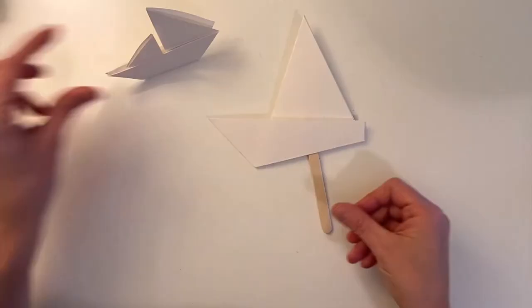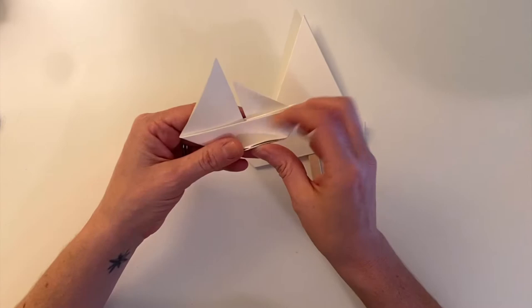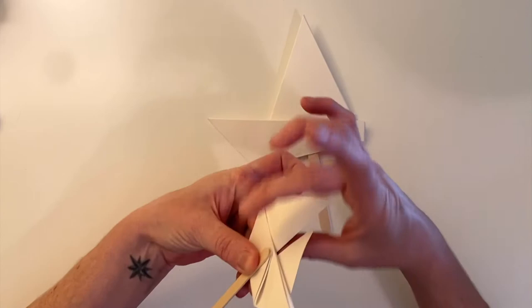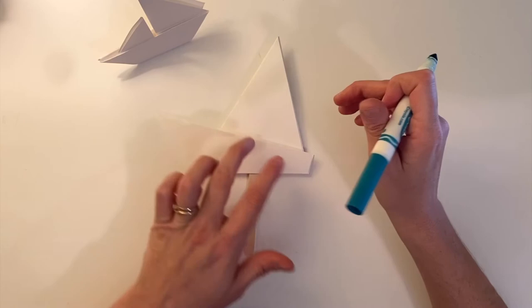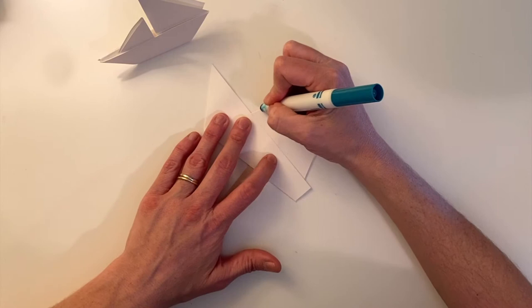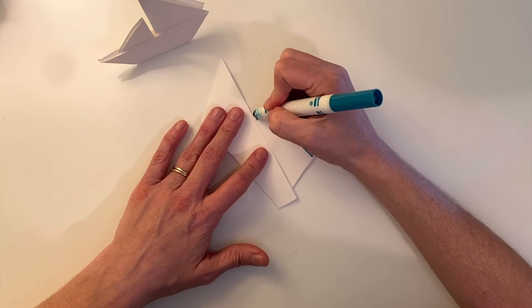If you want to add a popsicle stick to the boat that you just made, you can glue that fold, that stand, to the back of the boat, and then glue the popsicle stick on the back of that. But I'm going to keep it so that it stands on its own. So now you get to use whatever materials you want and have at home to decorate your boats. You can use markers, colored pencils, and since this is watercolor paper, you can even use watercolor paint if you have it.